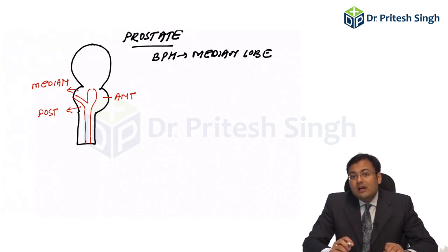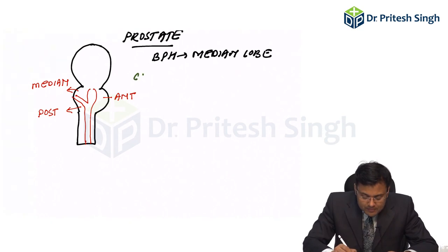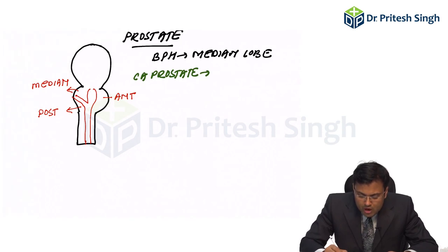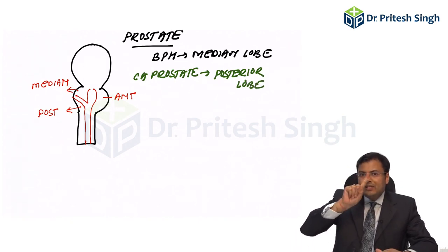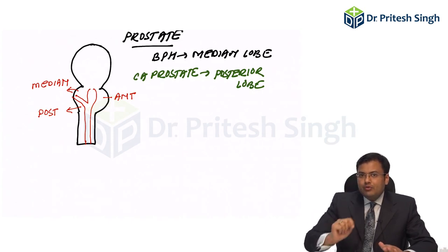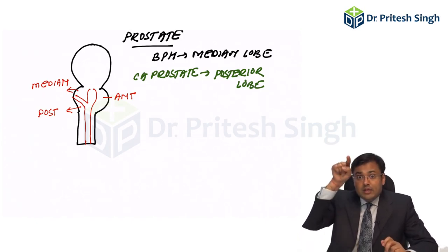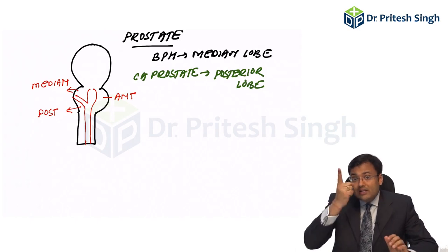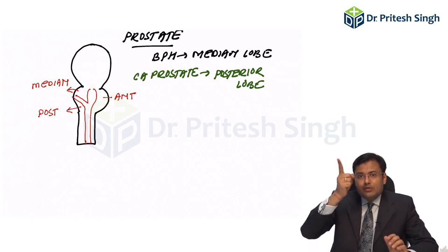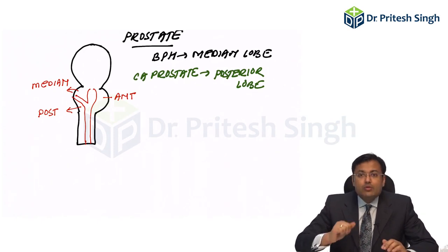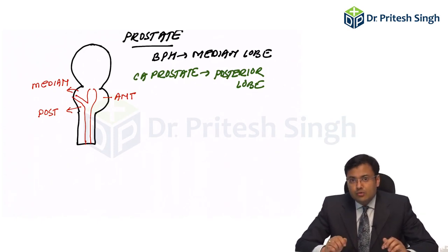After that, the question is asked about carcinoma prostate. Carcinoma prostate is most common in the posterior lobe. If we perform digital rectal examination, we are mainly going to feel the posterior lobe of the prostate, and sometimes the median lobe when it is enlarged. So on digital rectal examination, the posterior lobe is felt, and the median lobe as well. This is the older classification, not used nowadays.